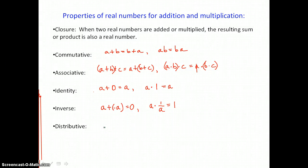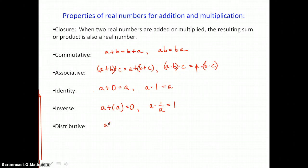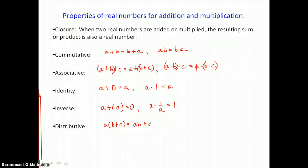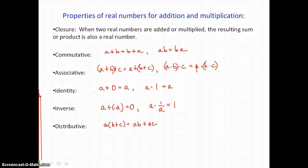The distributive property involves both addition and multiplication. A times the sum (B plus C) equals A times B plus A times C. When we distribute, we get rid of parentheses by multiplying the factor outside the parentheses by each term inside.